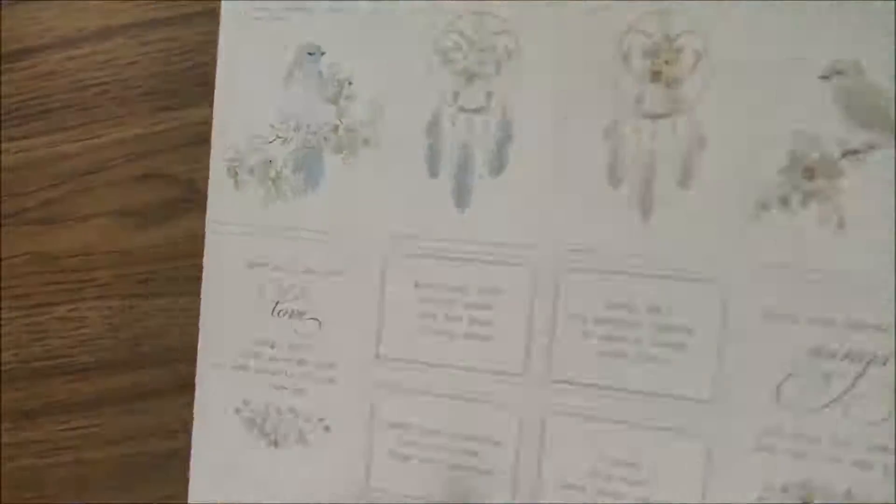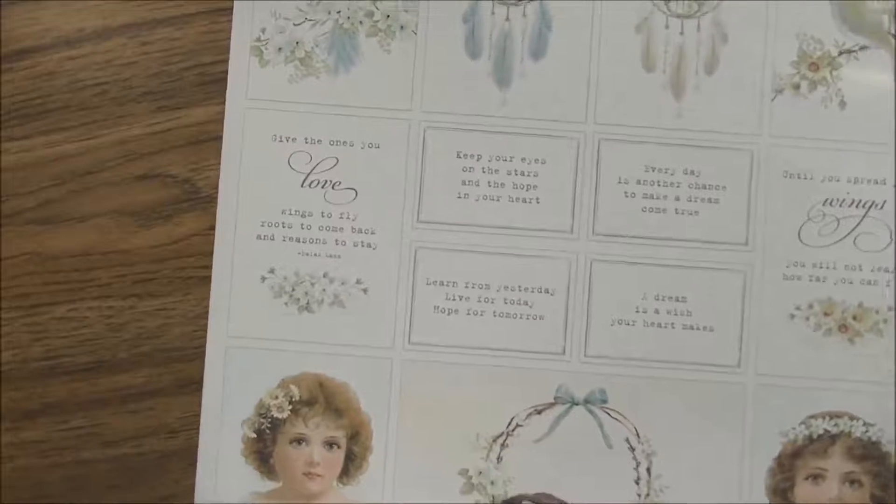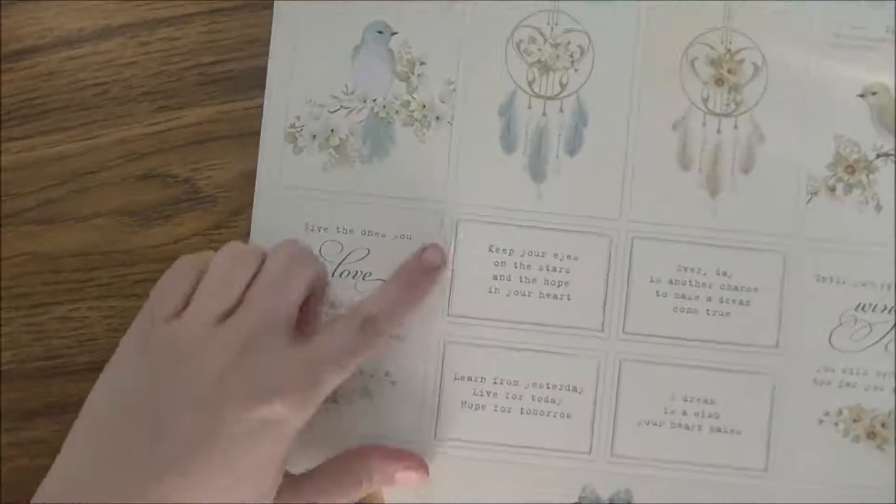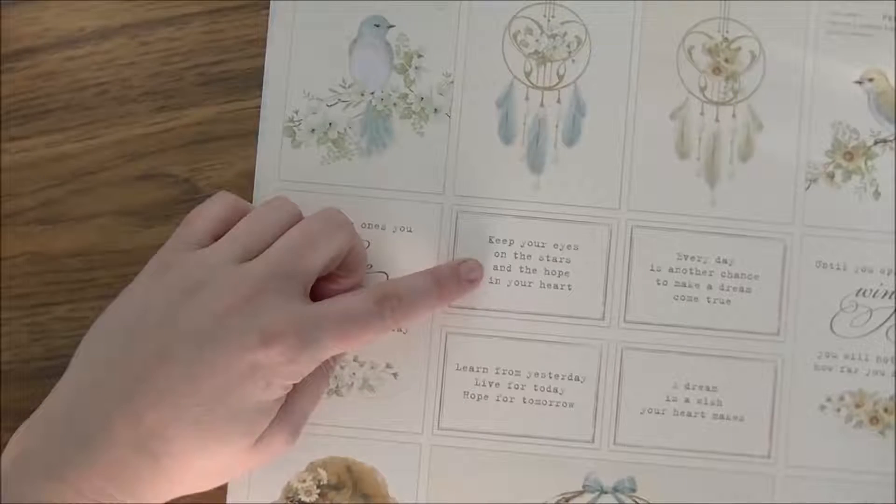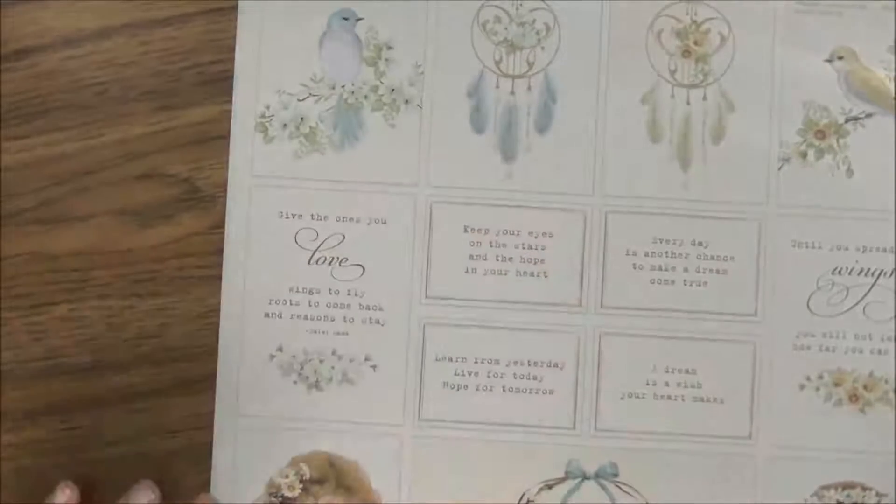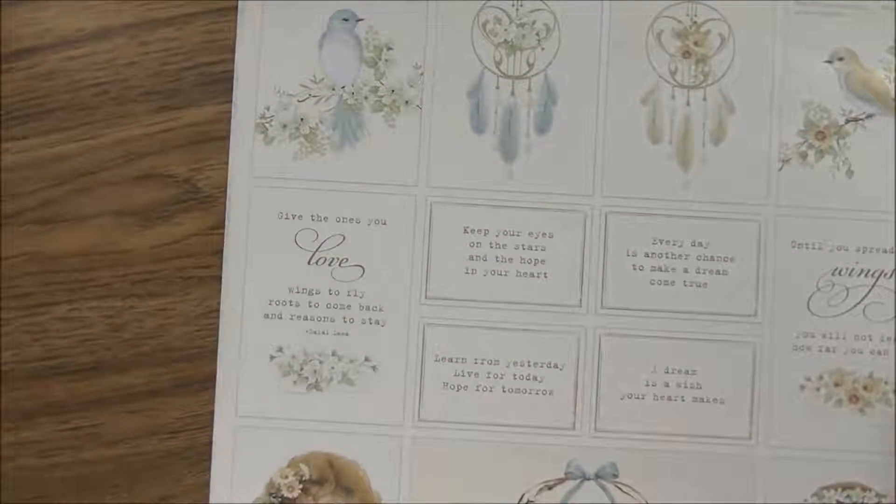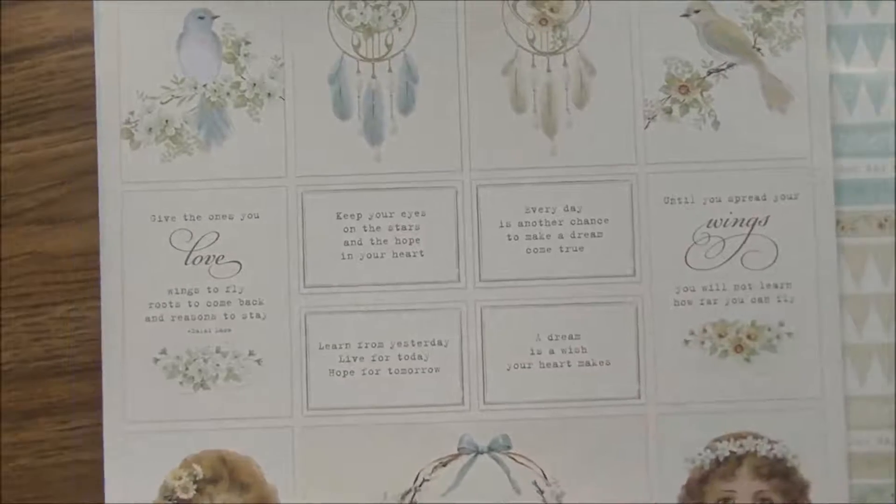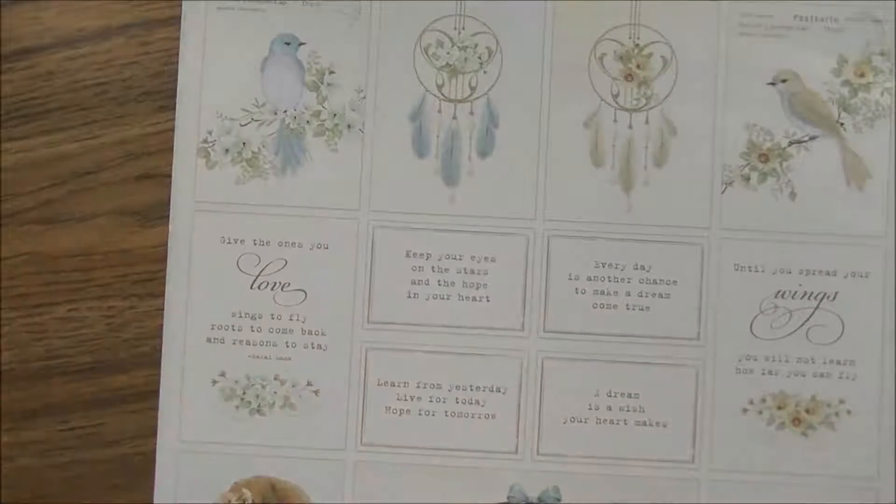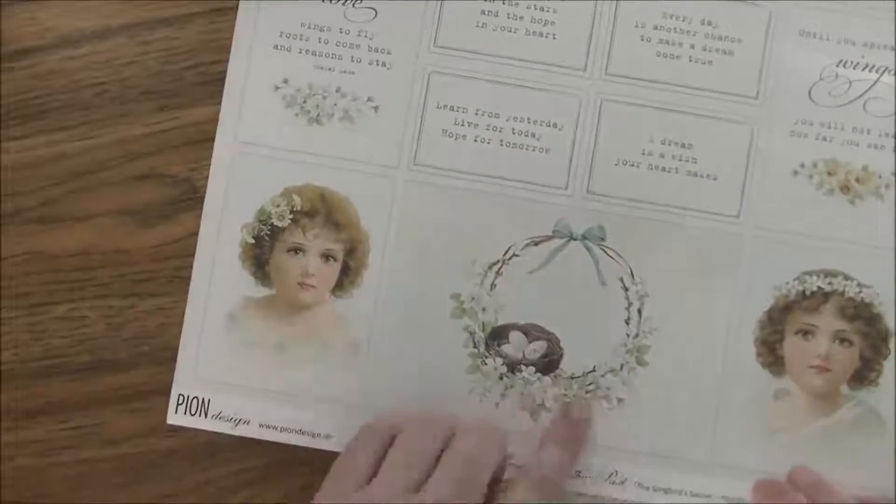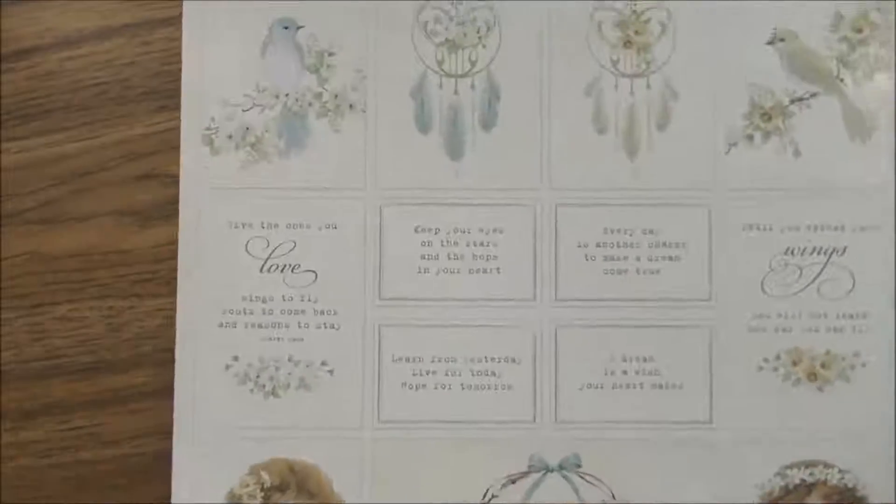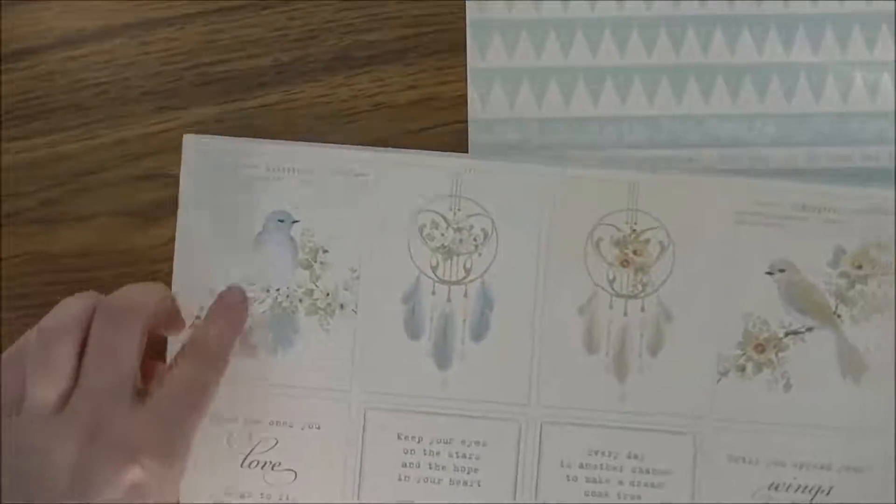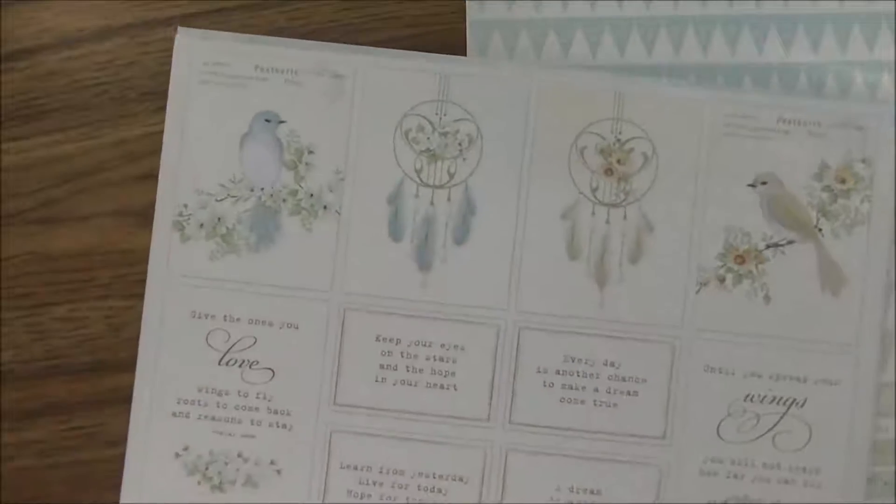The back side of that is the blue color from this collection. Then we have another piece - this one's called Songbird Secrets. It's more cut-aparts and it says like keep your eyes on the stars and hope, the hope in your heart, every day is another chance to make your dream come true, until you spread your wings you will not learn how far you can fly. Just some really uplifting sentiments. You got two little girl cut-aparts down here and this beautiful little wreath, then up along the top you got two birds and some dream catchers. This is a single-sided piece of paper.